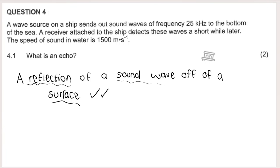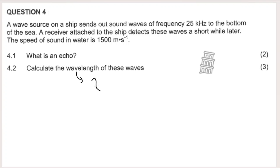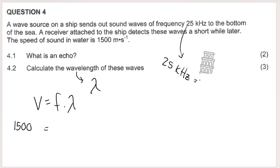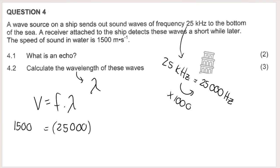Question 4.2: calculate the wavelength of the sound waves. Wavelength (lambda λ) is found using v = f × λ. The speed of sound in water V = 1,500 m/s, and frequency = 25 kHz = 25,000 Hz (multiply by 1,000 because there are 1,000 Hz in 1 kHz). So λ = 1,500 ÷ 25,000 = 0.06 m. Remember the unit — wavelength is measured in meters.